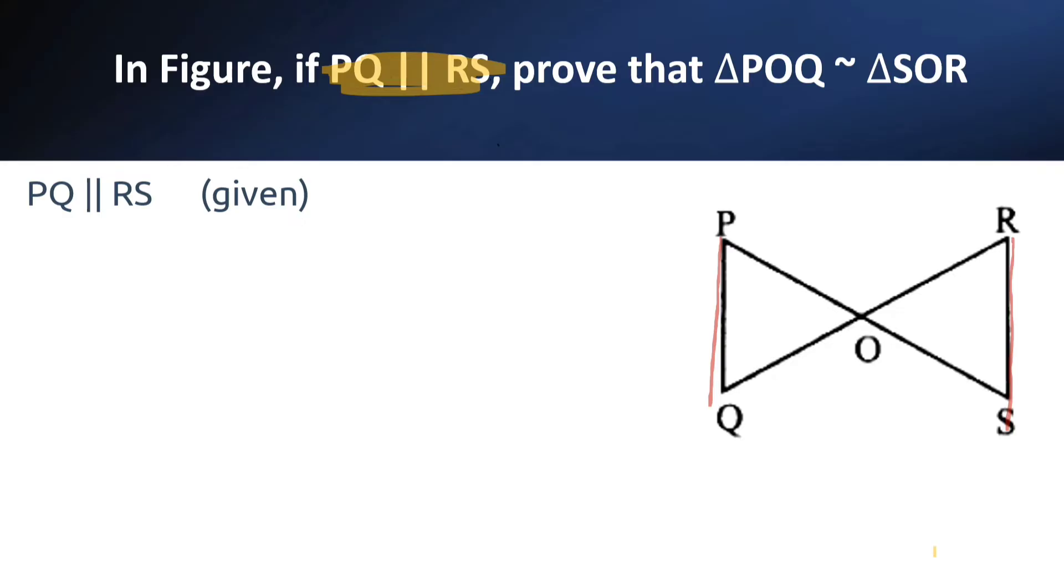Now we can observe that angle QPO is equal to angle RSO. Angle P equals angle S because they are alternate angles.